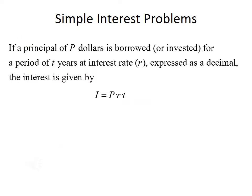The first type of problem we'll talk about in this section are simple interest problems. If a principal of P dollars is borrowed or invested for a period of T years at interest rate R, expressed as a decimal, then the interest on the money can be given by the formula I equals P times R times T. Let's use this formula to solve a word problem.